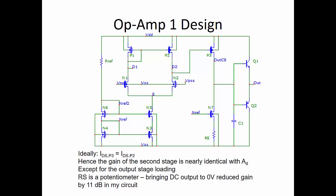RS in this circuit is a potentiometer. The purpose of that is to bring the DC output to zero volts. That is to balance N7 and P3. But in my circuit, once I built it, it reduced the gain to 11 decibels. Now keep in mind that the output resistance of the differential pair, when biased with the currents from Task 3, was on the order of 80 kilo ohms.